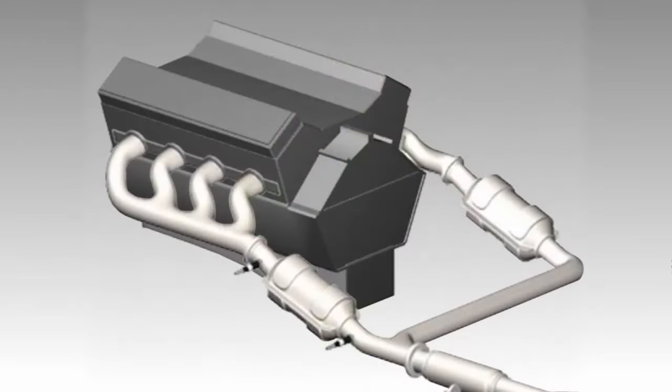The valve cover gasket is located between the cylinder head and the valve cover. If oil is seen on the exhaust manifold of the vehicle, it is usually a good indicator that the valve cover gasket is leaking.